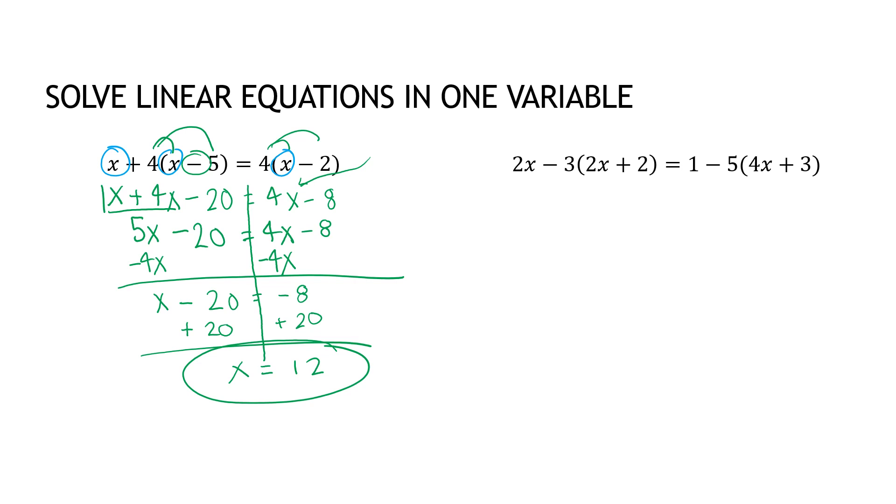For my second example, I'm going to do it the same way. I'm keeping the 2x the same. I'm taking minus 3 times 2x, so minus 6x. Minus 3 times 2, so minus 6. On the right side, I keep my 1. I have minus 5 times 4, that's minus 20x. And minus 5 times 3, that's minus 15.